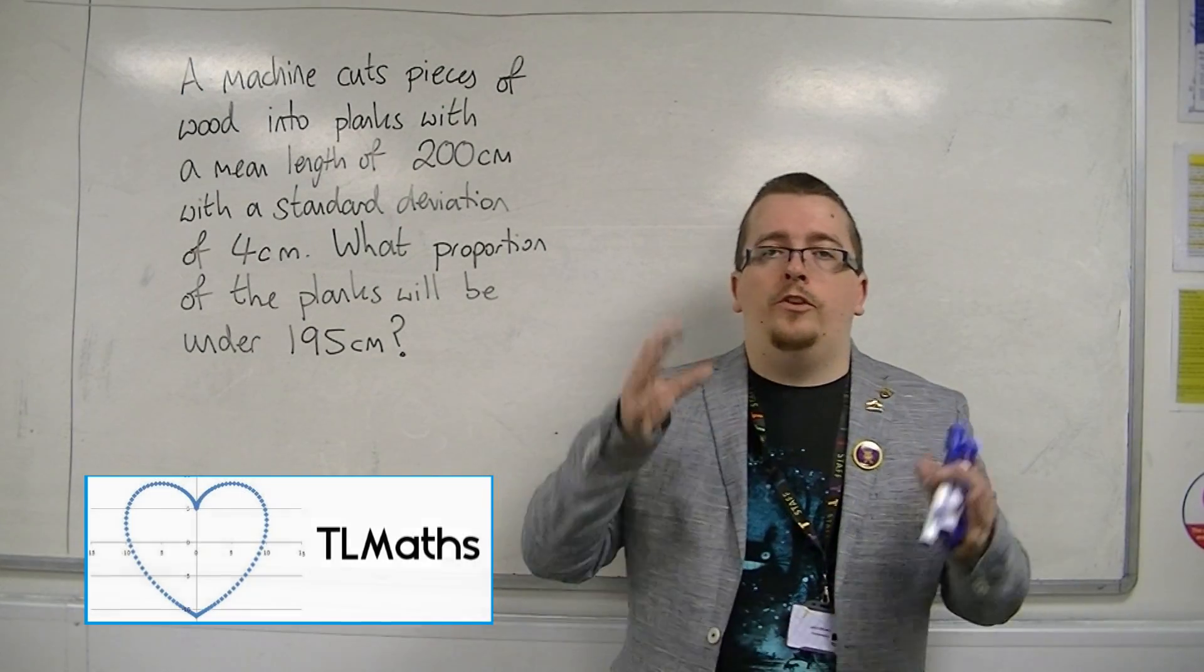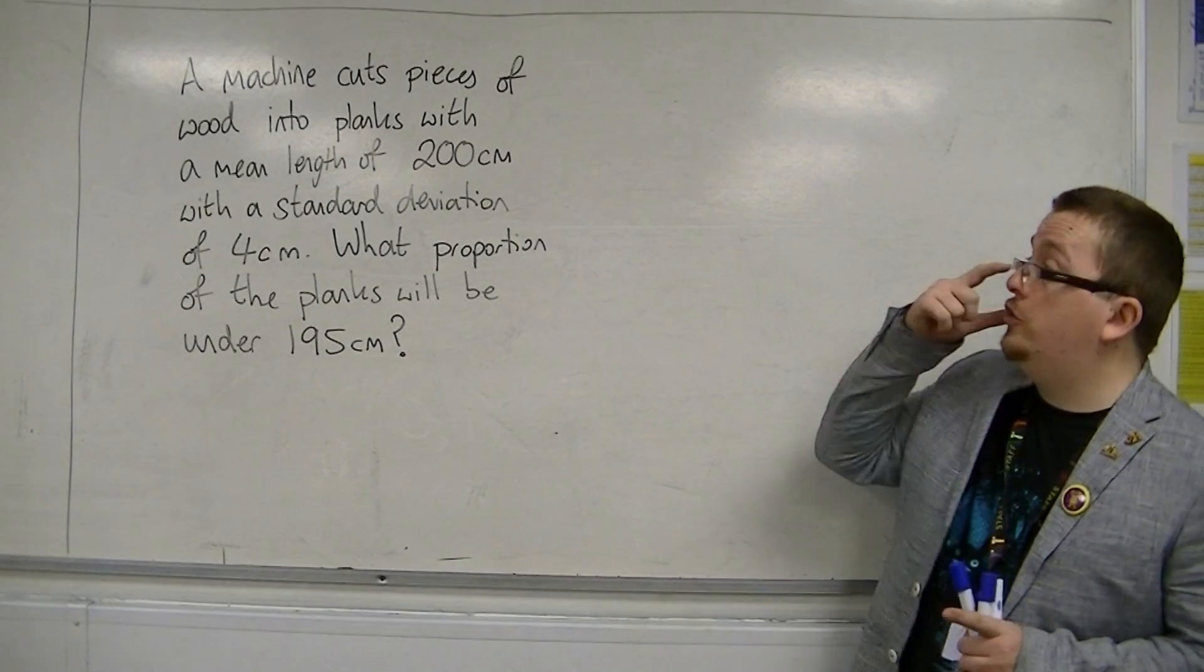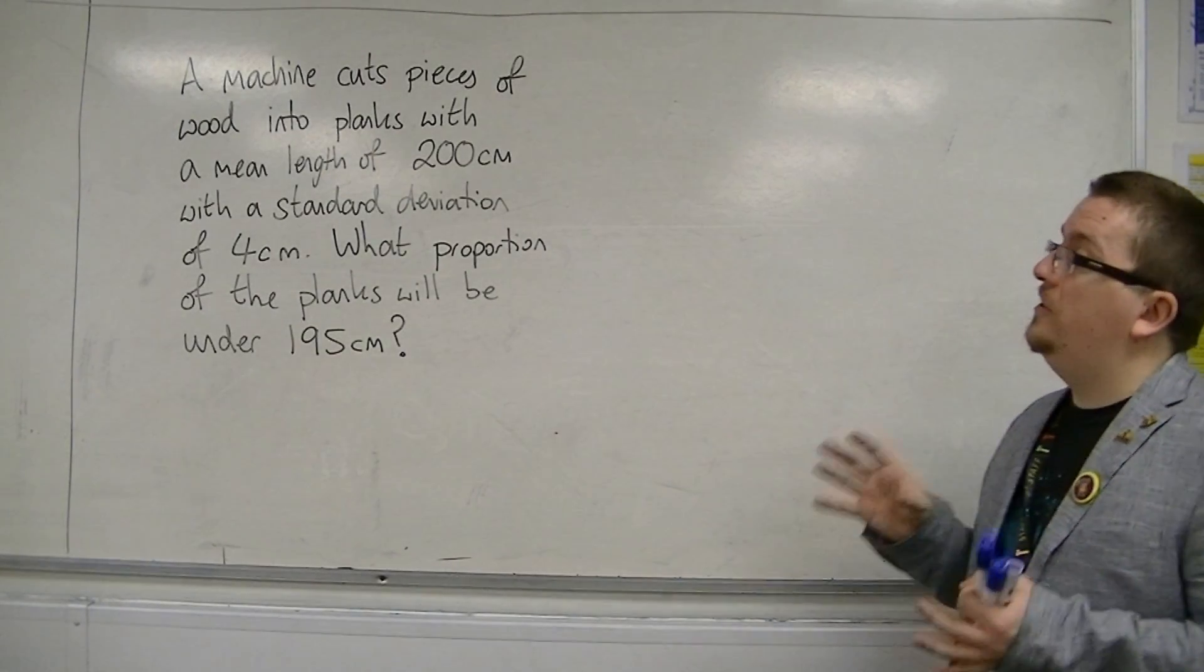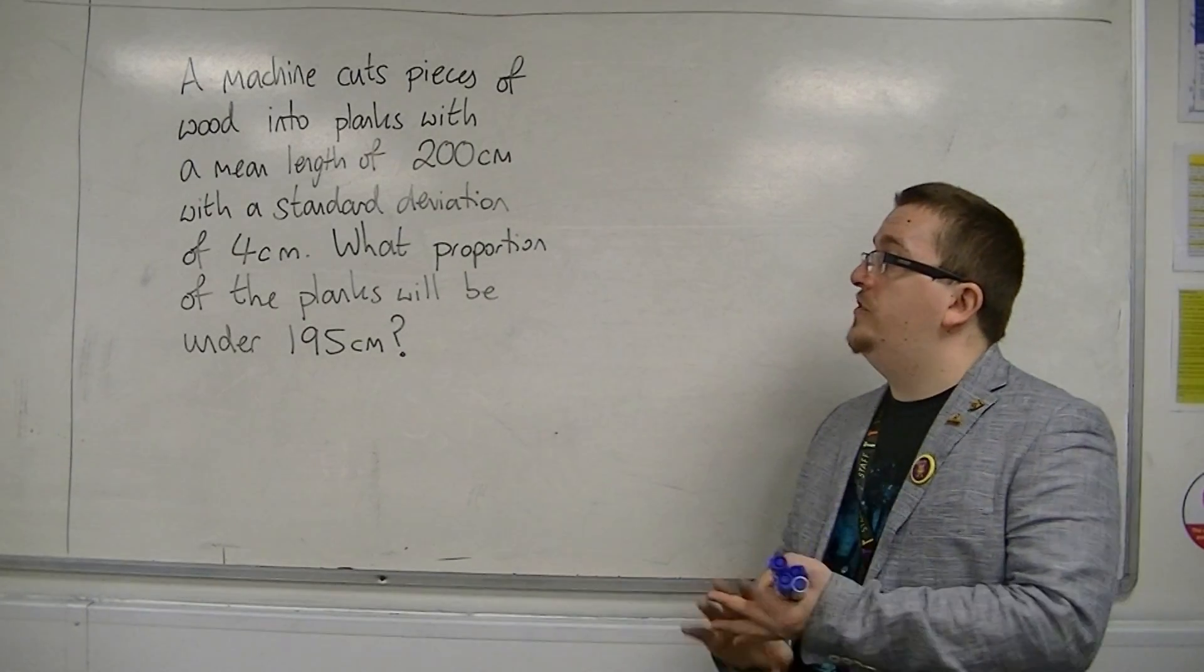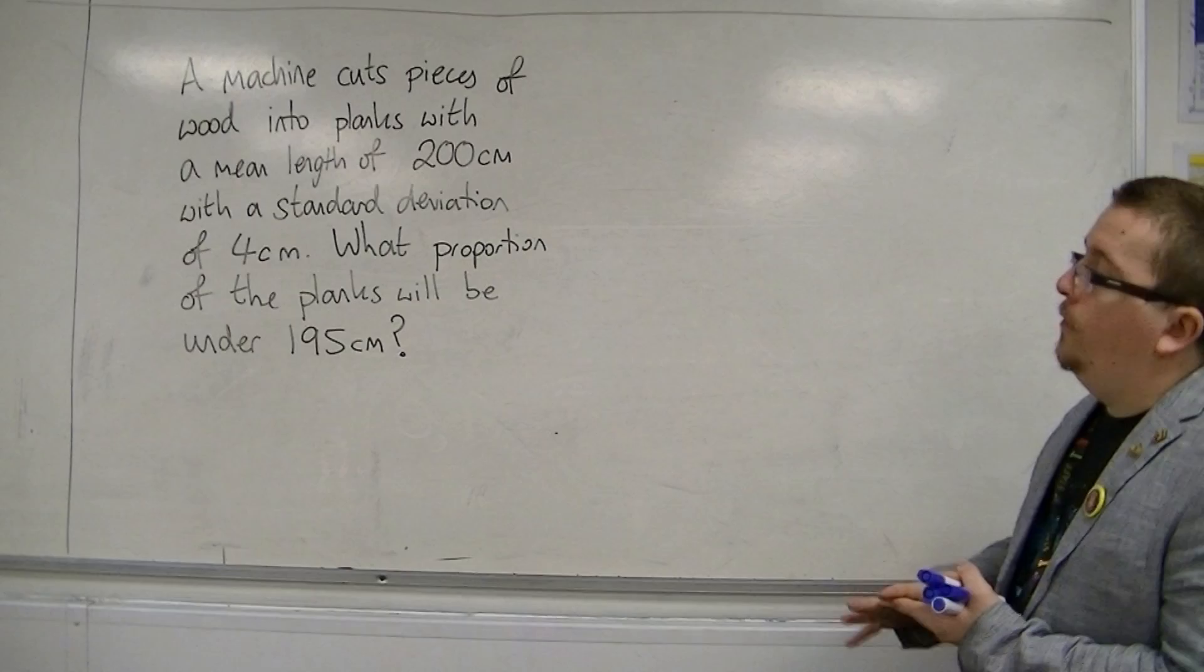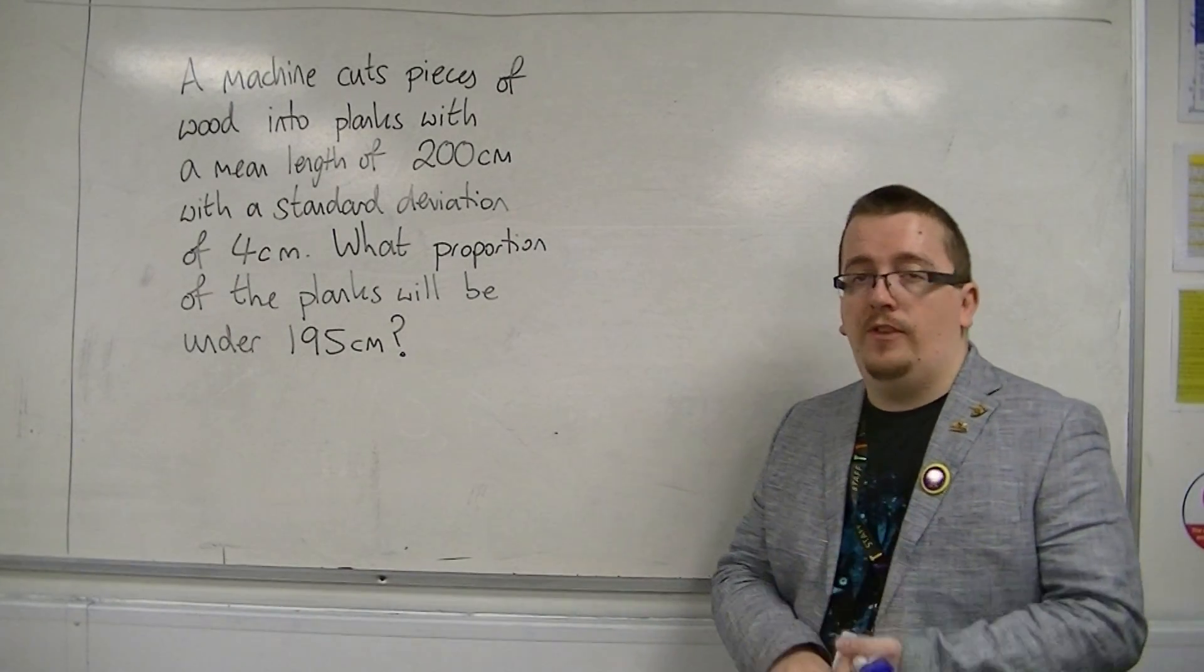We're now ready to have a go at our first normal distribution probability question. Let's say a machine cuts pieces of wood into planks with a mean length of 200 centimeters and with a standard deviation of 4 centimeters. What proportion of the planks will be under 195 centimeters?